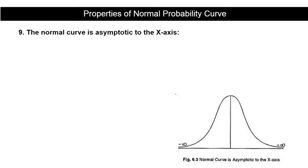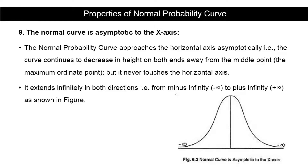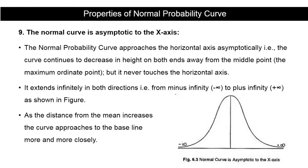The ninth property is that the normal curve is asymptotic to the x-axis. The curve approaches the horizontal axis asymptotically — it continues to decrease in height on both ends away from the center but never touches the horizontal axis. It extends infinitely in both directions from minus infinity to plus infinity. As the distance from the mean increases, the curve approaches the baseline more and more closely.